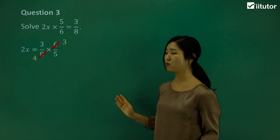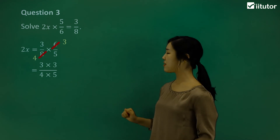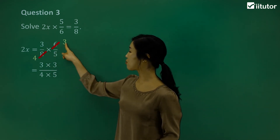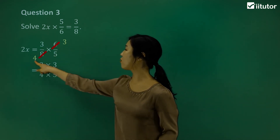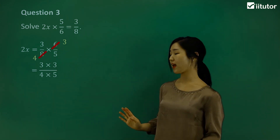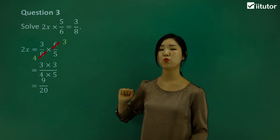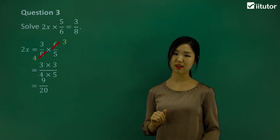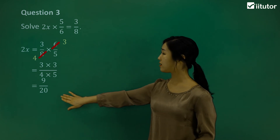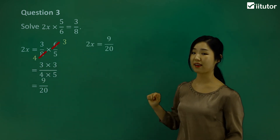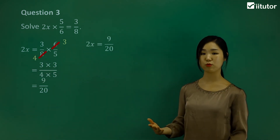Now that we've done all the simplification, we can move on to the multiplication. Multiply the numerators together: we have 3 times 3 on the numerator, and on the denominator we have 4 times 5. 3 times 3 is 9, and 4 times 5 is 20, so we have 9 over 20. But we're not done yet because 9 over 20 equals 2x, not x. So we write 2x equals 9 over 20, and then we'll solve for x.